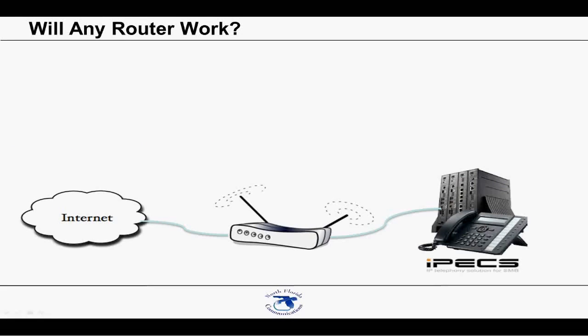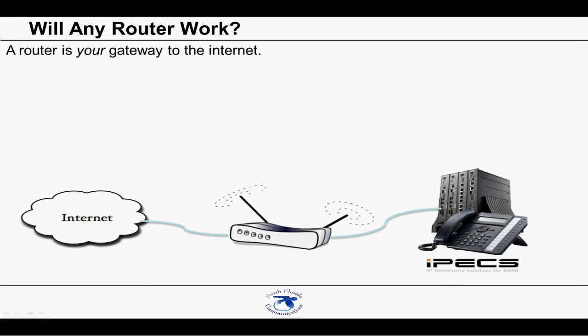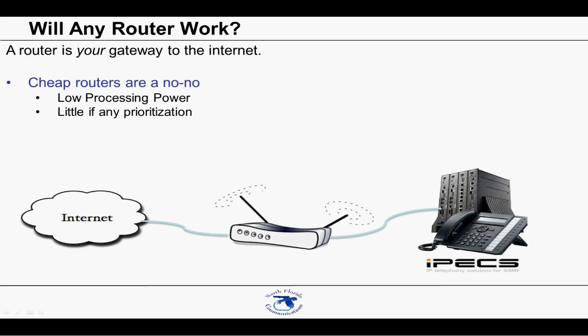Will any router work? No, and you shouldn't scrimp in this area. A router is your gateway to the internet — it directs traffic to and from your network. In my opinion, when people move to SIP trunks, one of the biggest mistakes they make is using a cheap router. Cheap routers are simply a big no-no. They're mass produced at the lowest cost, with very little processing power and very little, if any, prioritization of traffic. I would suggest that if you can buy the router in a big box store, it's not good enough for your business, much less for SIP trunking.